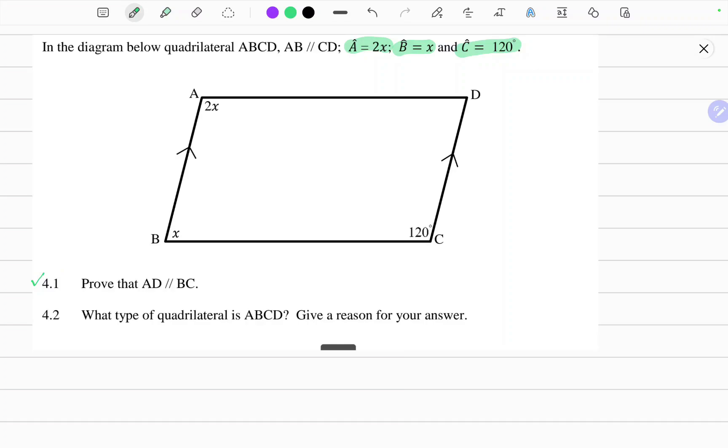So the first question wants us to prove that AD is parallel to BC. In other words this line AD should be parallel to BC. In order for us to prove that AD is parallel to BC, we need to look for co-interior angles between the parallel lines.